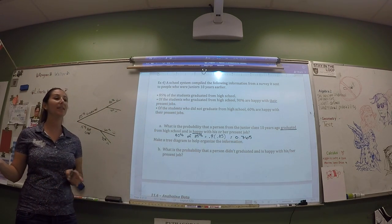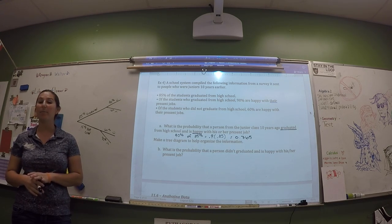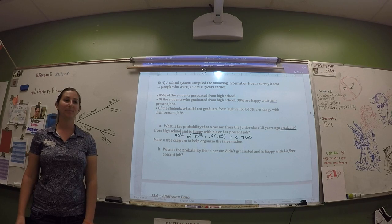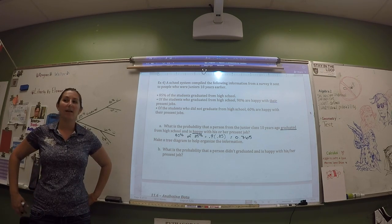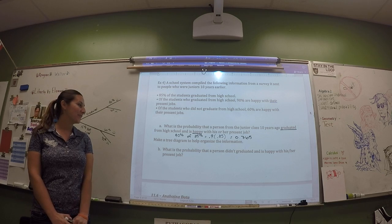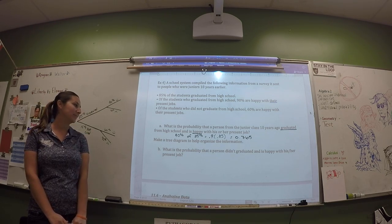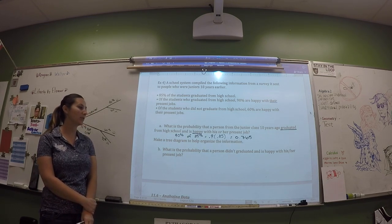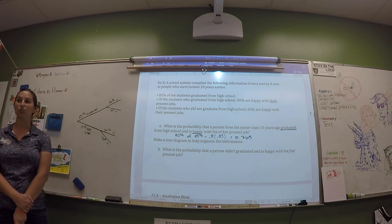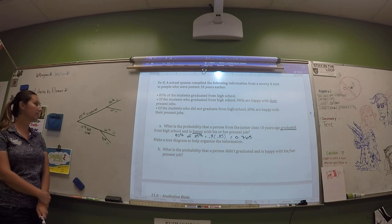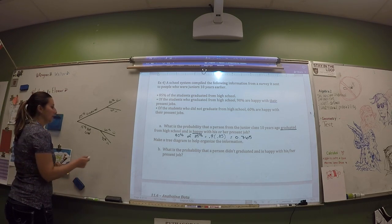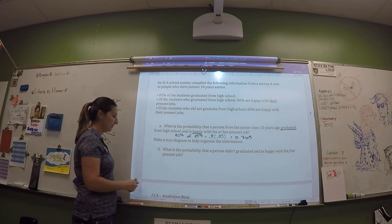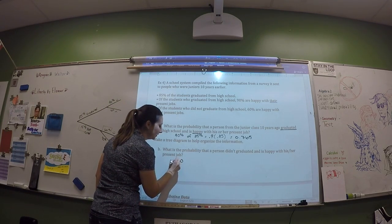That's 76.5% of the people they surveyed who are happy graduates. The calculator doesn't lie. Now what is the probability that a person didn't graduate and is happy? We're going to do 60% times 15%, so 0.6 times 0.15.